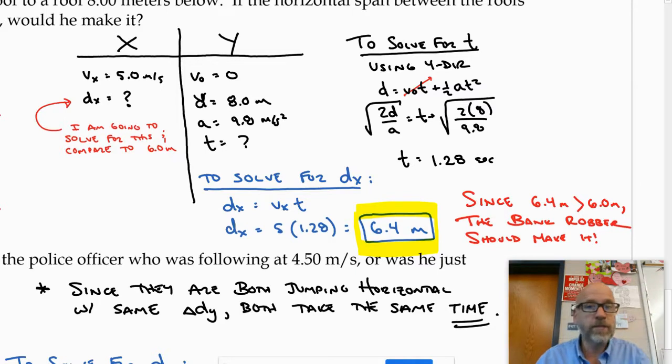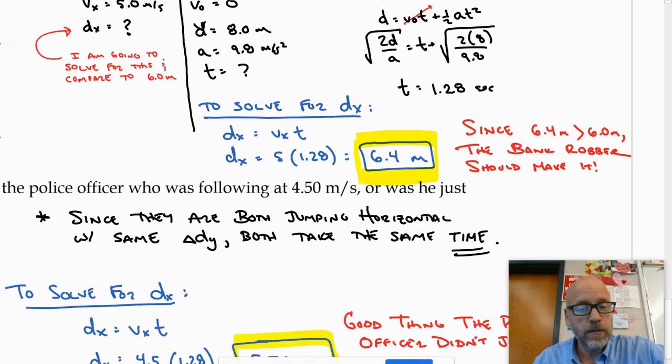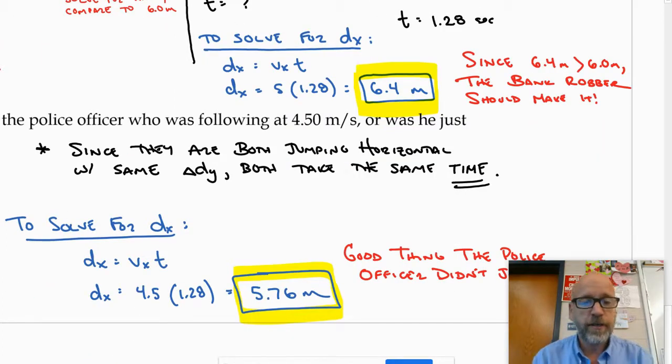They would make it because that's more than the 6 meters. But the police officer who could only run 4.5 meters per second—now obviously this isn't Officer DeLuca; he could do it if a robber could do it, DeLuca could do it. But in this case, the police officer could only jump 5.76 meters, so it's probably a good job that they didn't.